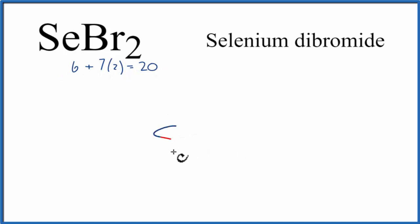We place Se at the center, it's the least electronegative, and then we'll put bromines on either side.